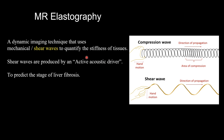It is mainly used in liver elastography. The main difference between the two waves is the motion of particles. In compression waves, the motion of particles will be along the propagation of the wave, whereas in shear waves it will be perpendicular to the direction of propagation. There is a device called an active acoustic driver which produces these shear waves and is used to quantify stiffness.